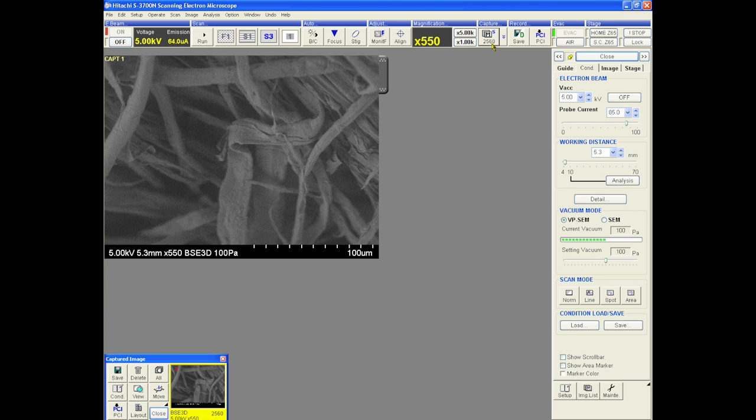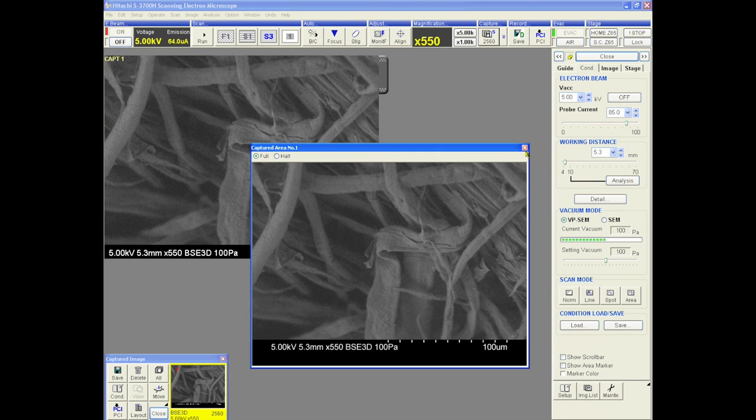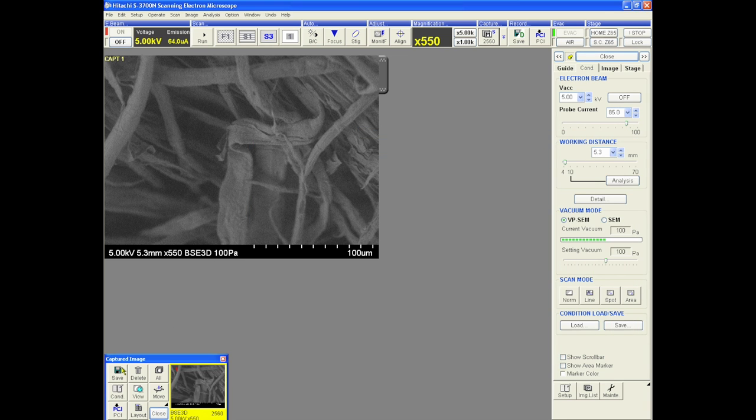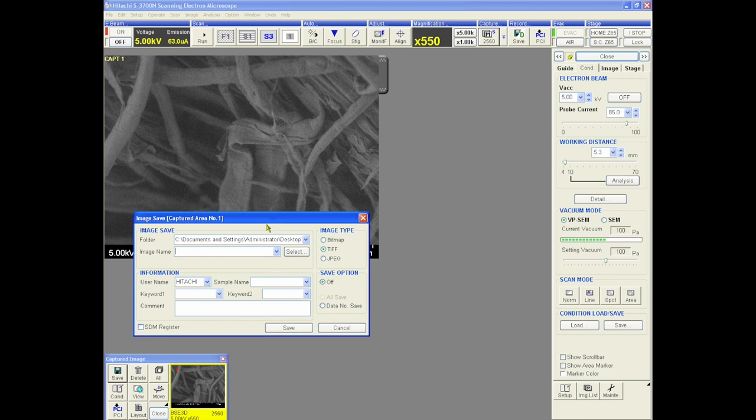Use the capture button to acquire an image. Once an image is acquired, it can be saved and exported to a post-imaging analysis software. The PCI software allows image manipulation and measurement among other capabilities. For the full instructions on these features, please refer to the manual.